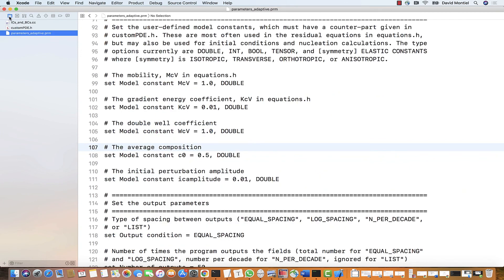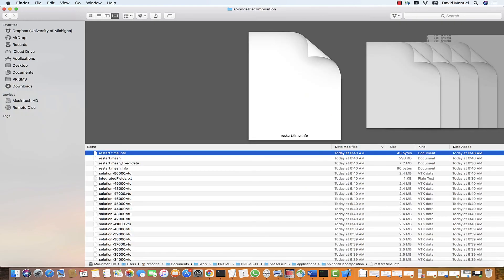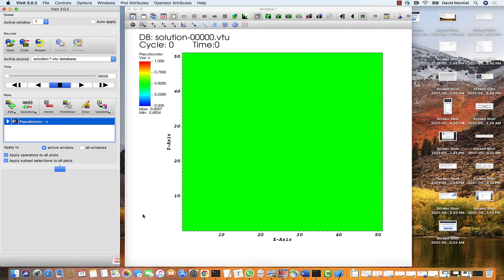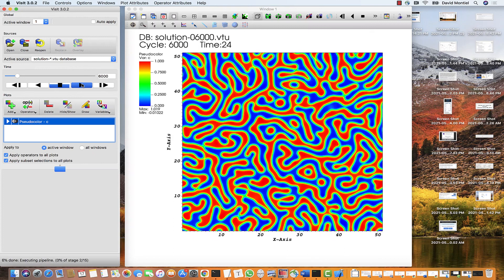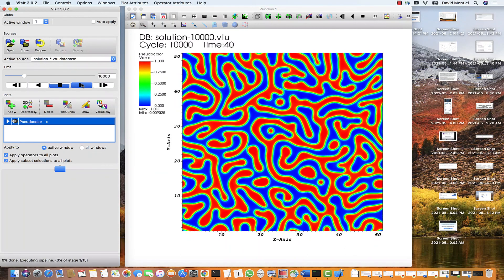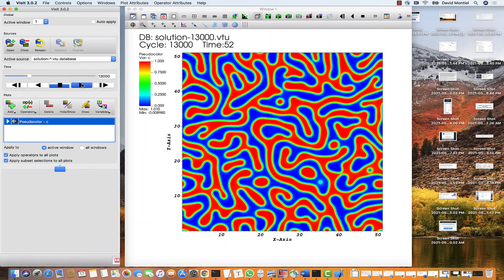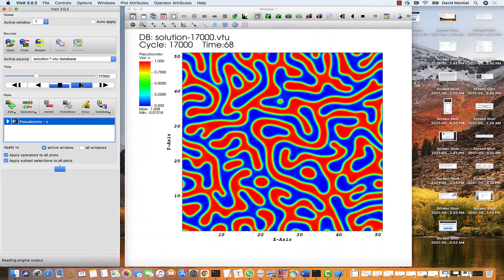And once we have the results, we are going to plot them. And this is how the evolution looks. As you can see, small domains start to appear. And as time progresses, the domains coarsen and take the bulk value of either zero, the blue regions, or one, the red regions.